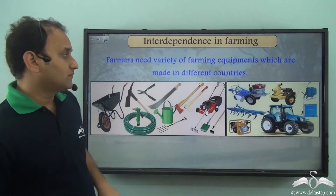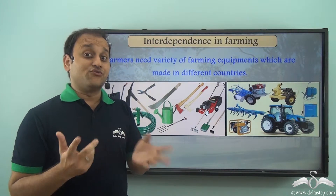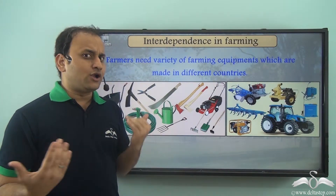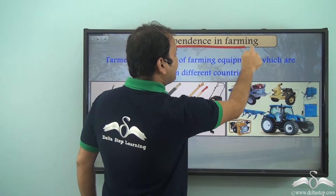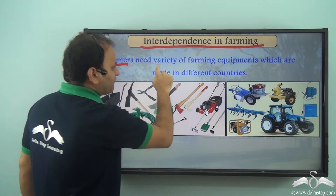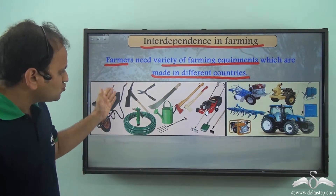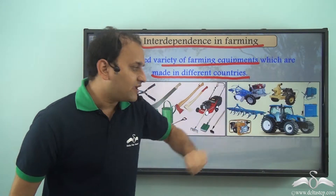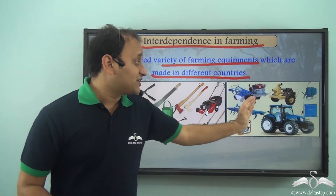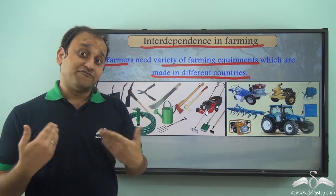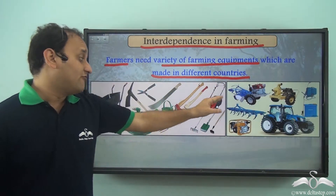Now, not only food, there are so many different things for which we are interdependent. While we grow food, we also need a lot of different equipment for growing food, so there is interdependence in farming too. Farmers need a variety of farming equipment which is made in different countries. There are so many different equipment and vehicles required for proper farming, and these are manufactured in different parts of the world. So the farmers who grow food are also dependent on different countries and different people for all their requirements.